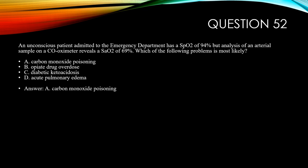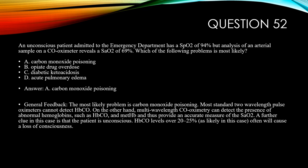The answer is A, carbon monoxide poisoning. Most standard two-wavelength pulse oximeters cannot detect carboxyhemoglobin levels (HbCO). On the other hand, multi-wavelength analyzers such as co-oximeters can detect abnormal hemoglobin such as carboxyhemoglobin and methemoglobin, providing an accurate measure of the patient's SaO2. A further clue is that the patient is unconscious — carboxyhemoglobin levels over about 20 to 25% will often cause a loss of consciousness.